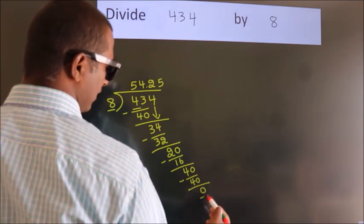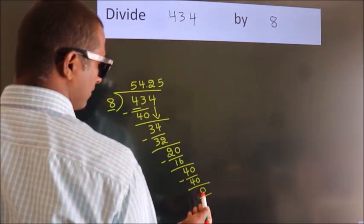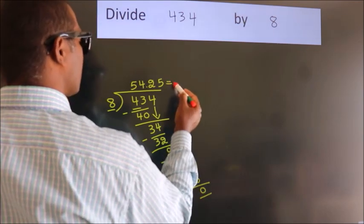Here, we got remainder 0. So this is our quotient.